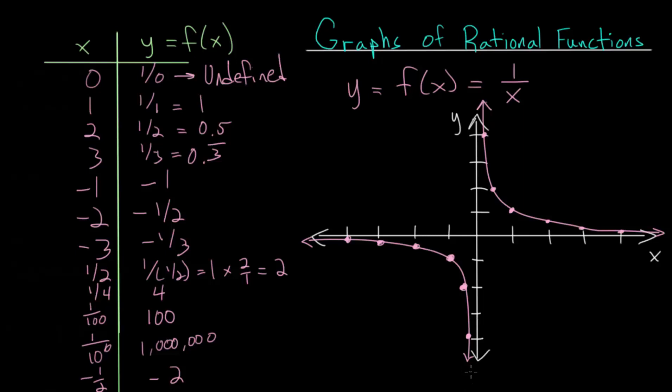As the negative values get bigger and bigger, the function starts approaching zero, or approaching this x-axis from below.